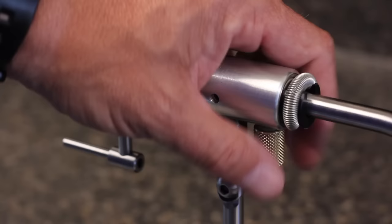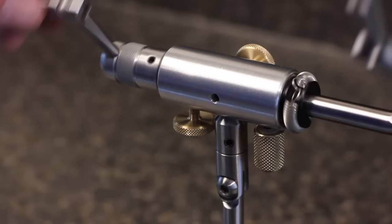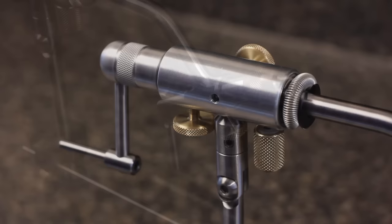There is also an indexing knob, which when tightened, allows the vise to be rotated to eight different indexing positions. This is extremely useful for a number of tying applications, including curing epoxy. Loosening the knob allows the vise to once again rotate freely without stops.